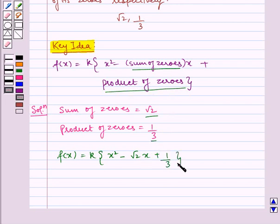Now, solving this polynomial, we get k into 3x square minus 3 root 2x plus 1, whole divided by 3.